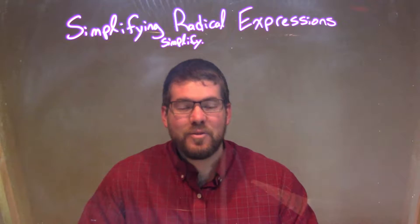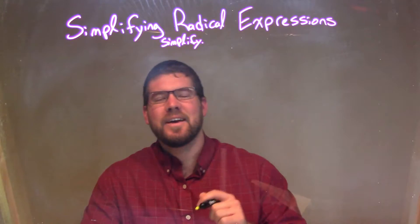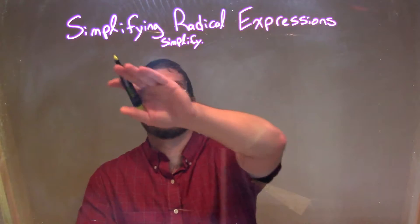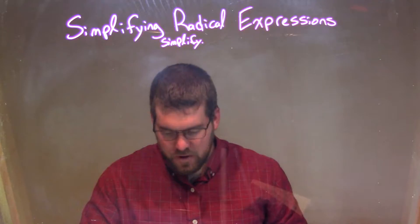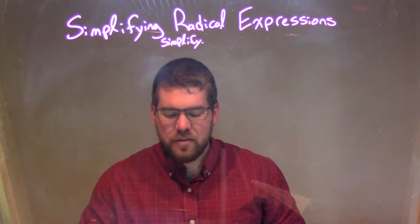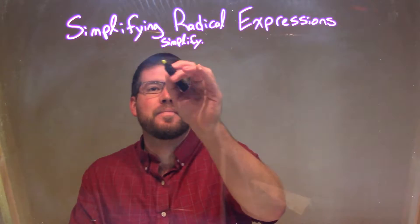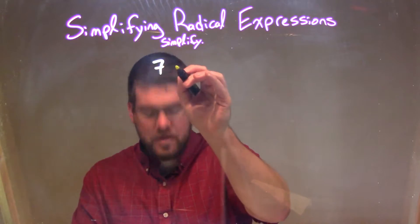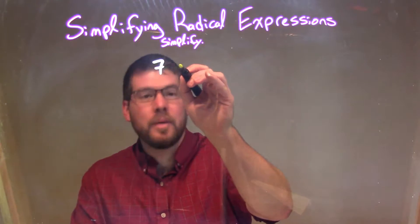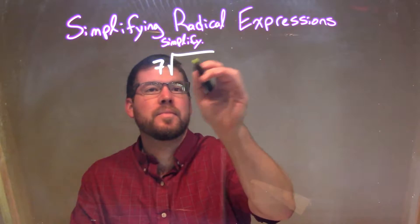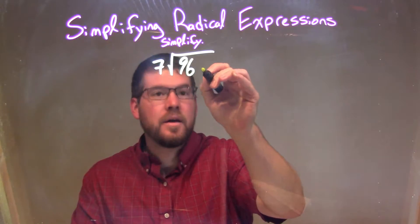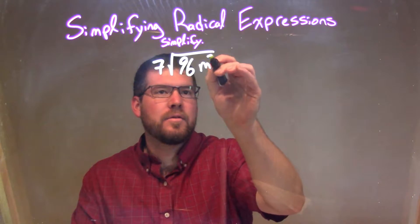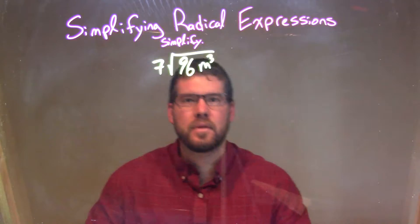Hi, I'm Sean Gannon, and this is MinuteMath, and today we're going to learn about simplifying radical expressions. So if I was given this expression: 7 times the square root of 96m to the 3rd.